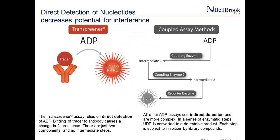Transcreener assays have very few reagents — just the antibody and the tracer. Compare this to coupled assay methods, which use a very convoluted approach requiring different coupling enzymes and a reporter enzyme to generate a signal. Each coupling or reporter enzyme is a potential target for compounds being screened, which increases the risk of false positives or missing a hit and adds labor for deconvoluting hits. Our direct assay format is much simpler.